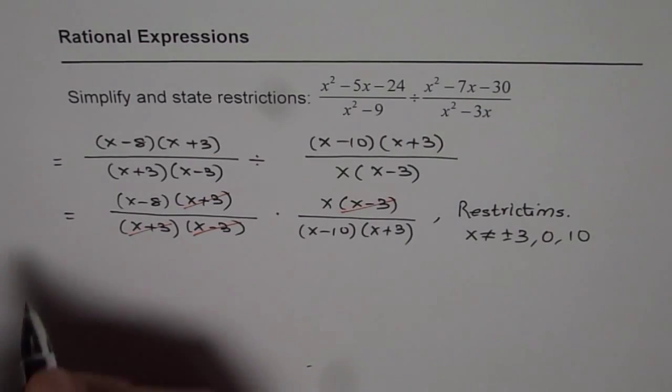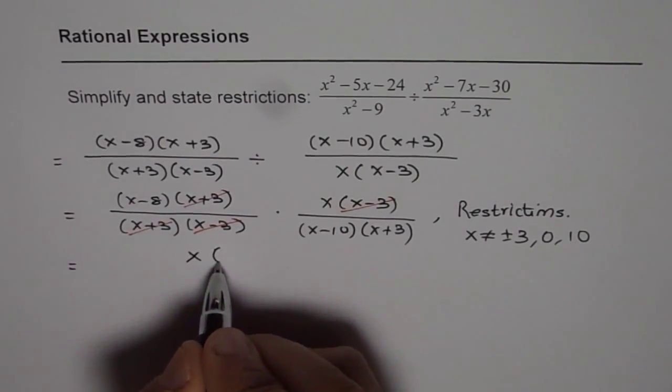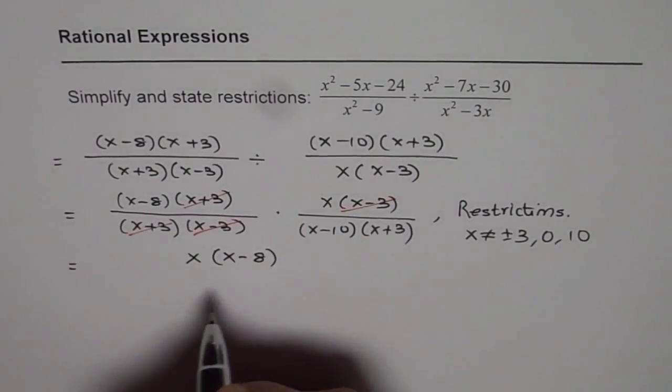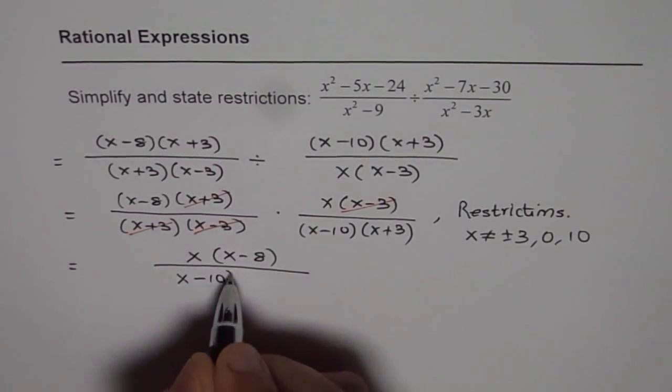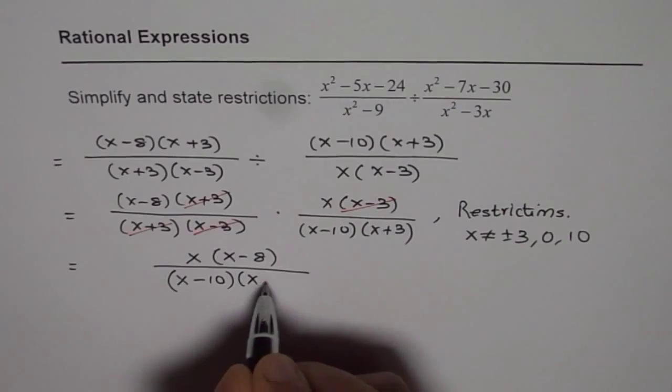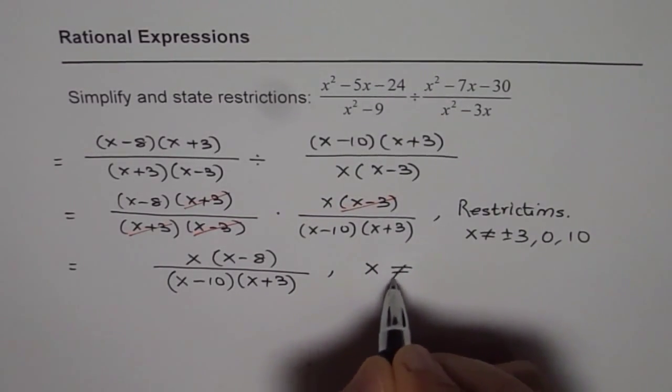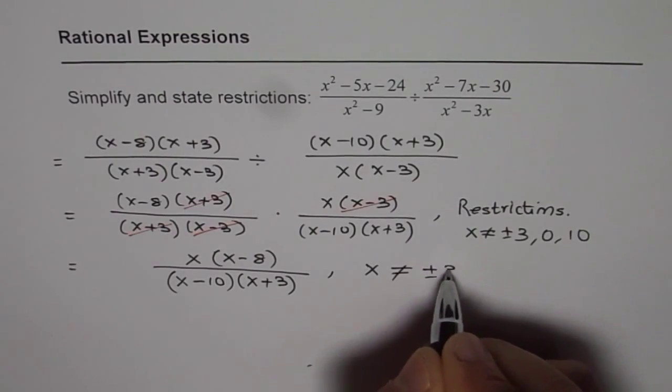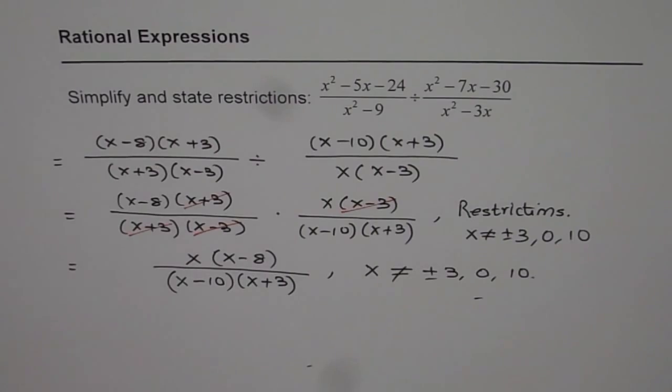This gives us the final answer, which is x times x minus 8 in the numerator. And the denominator has these two factors: x minus 10 times x plus 3. And of course, the restrictions are that x is not equal to plus or minus 3, 0 and 10. That is the final answer. Thank you.